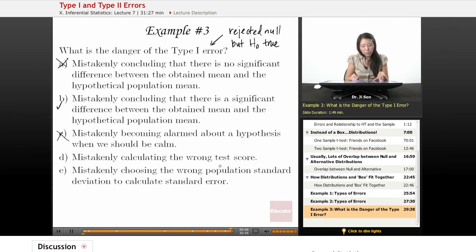Mistakenly calculating the wrong test score. Remember, these errors are not errors that you can actually avoid. These are not errors because we were sloppy. These are errors that are made because we don't know the real nature of the world. So this is actually not what we're talking about when we're talking about type 1 or 2 errors.